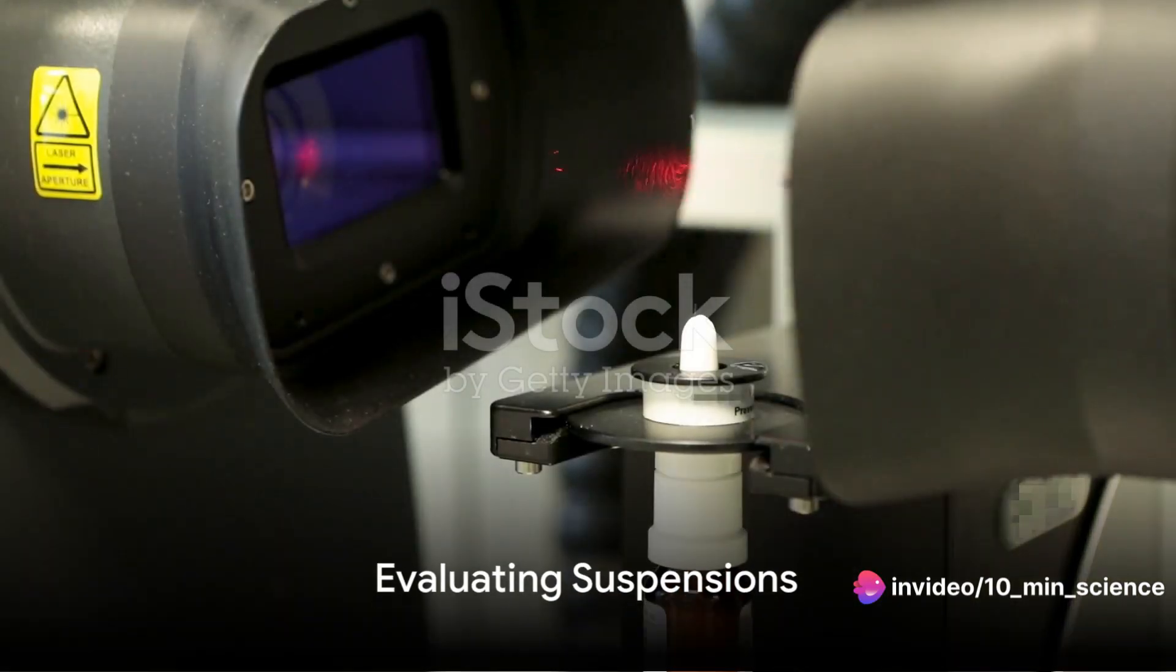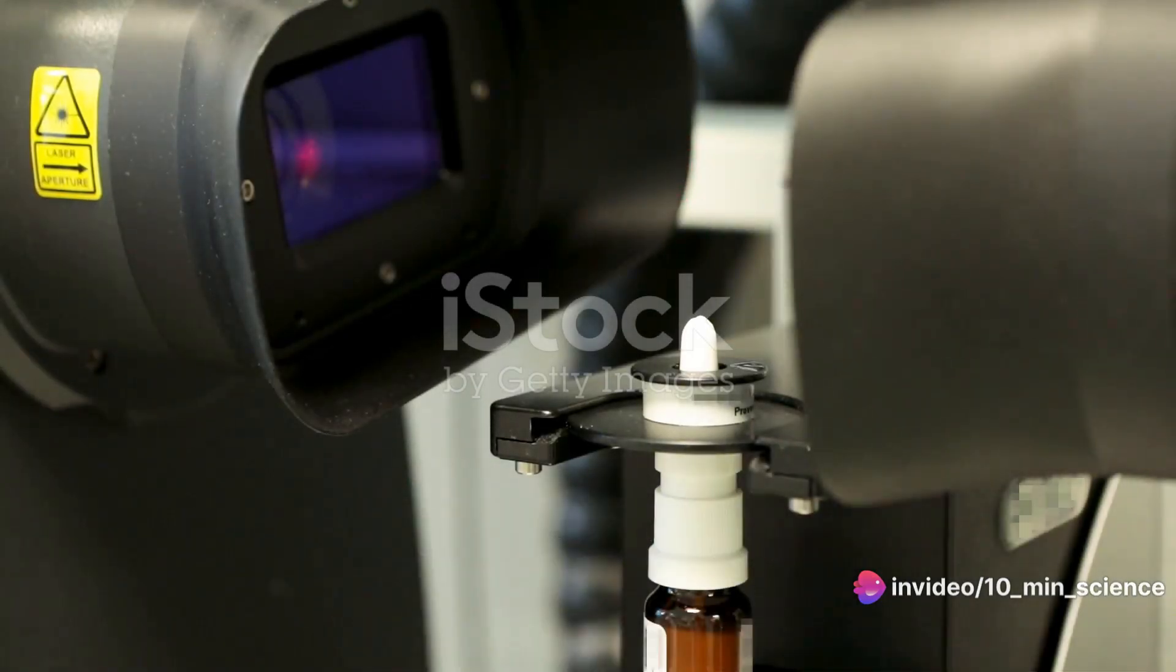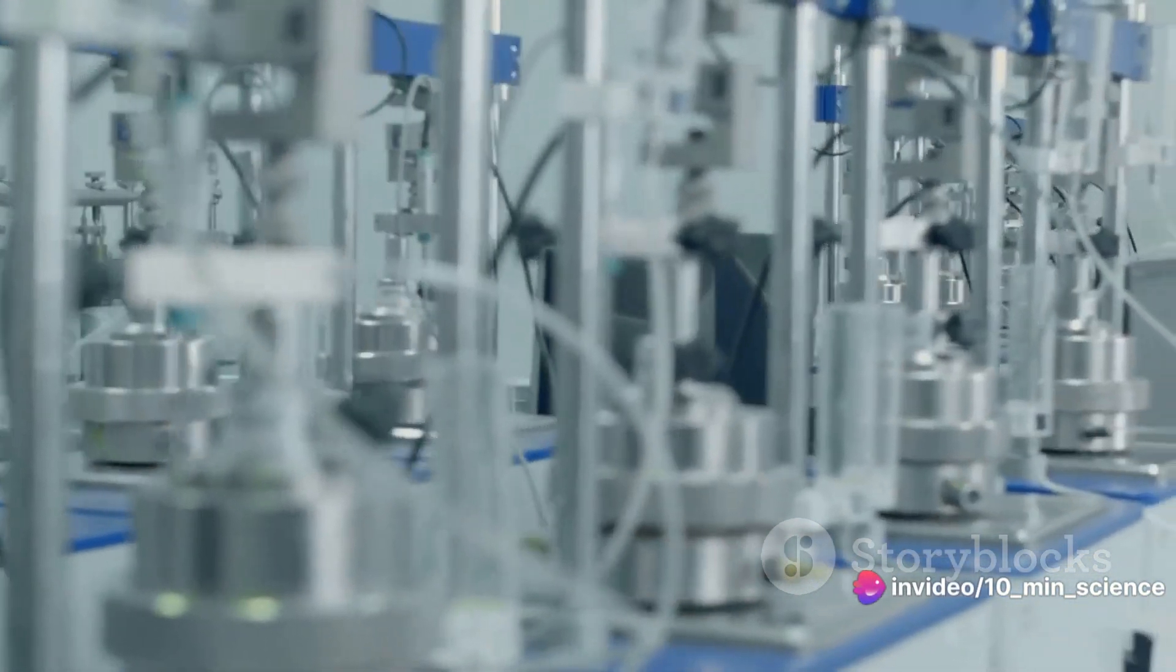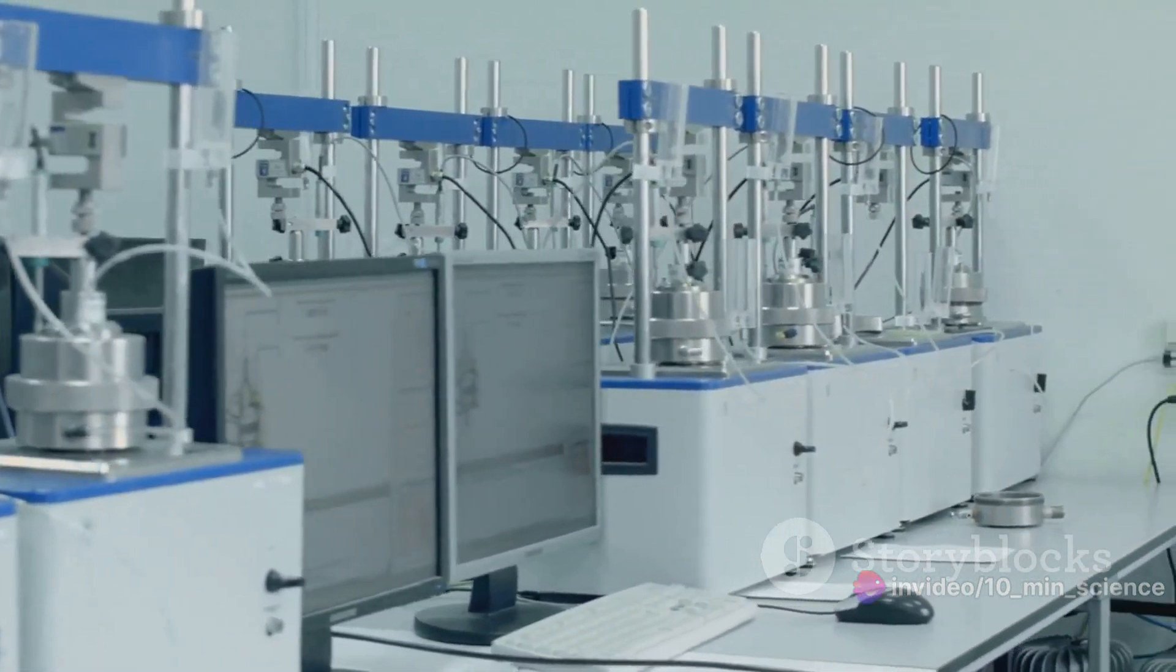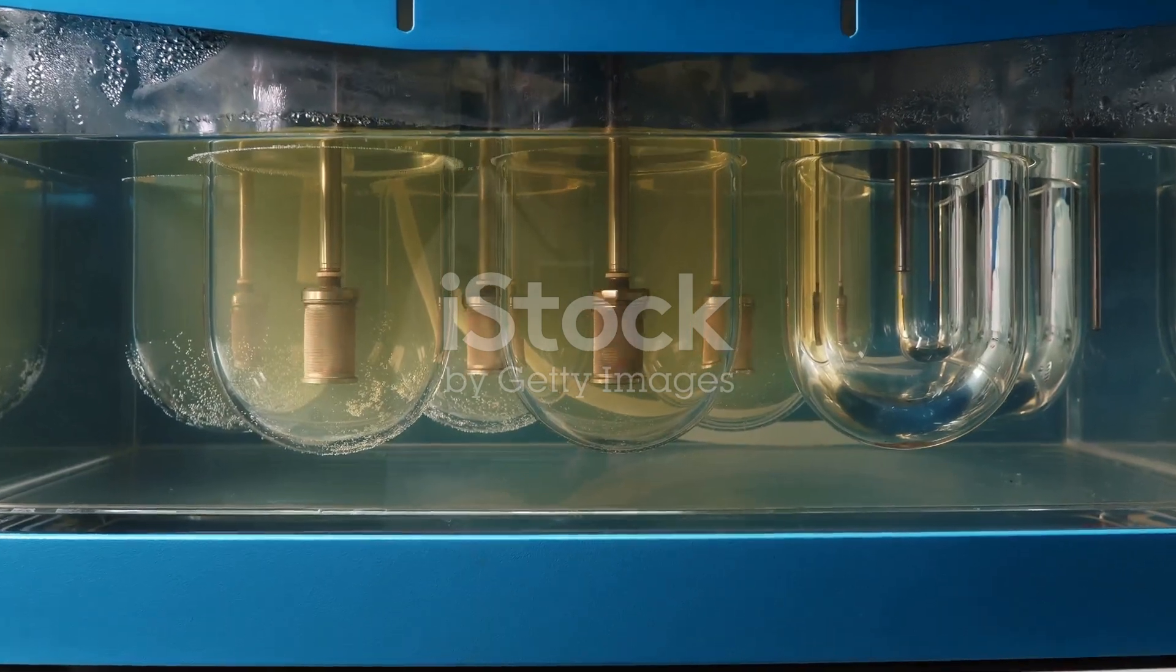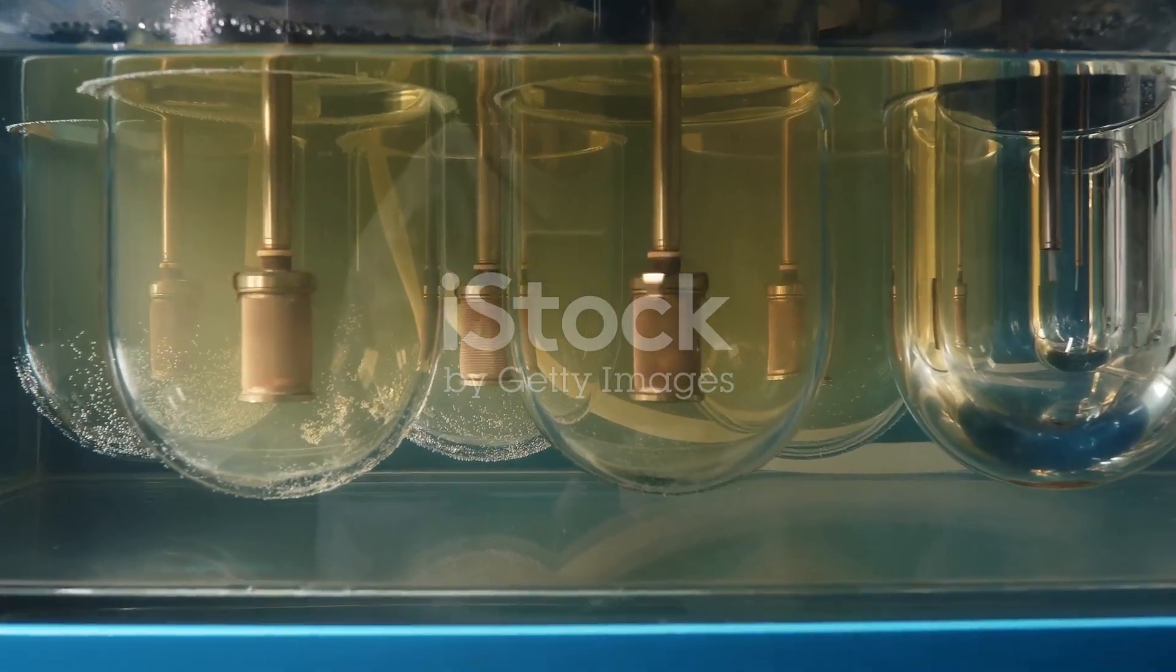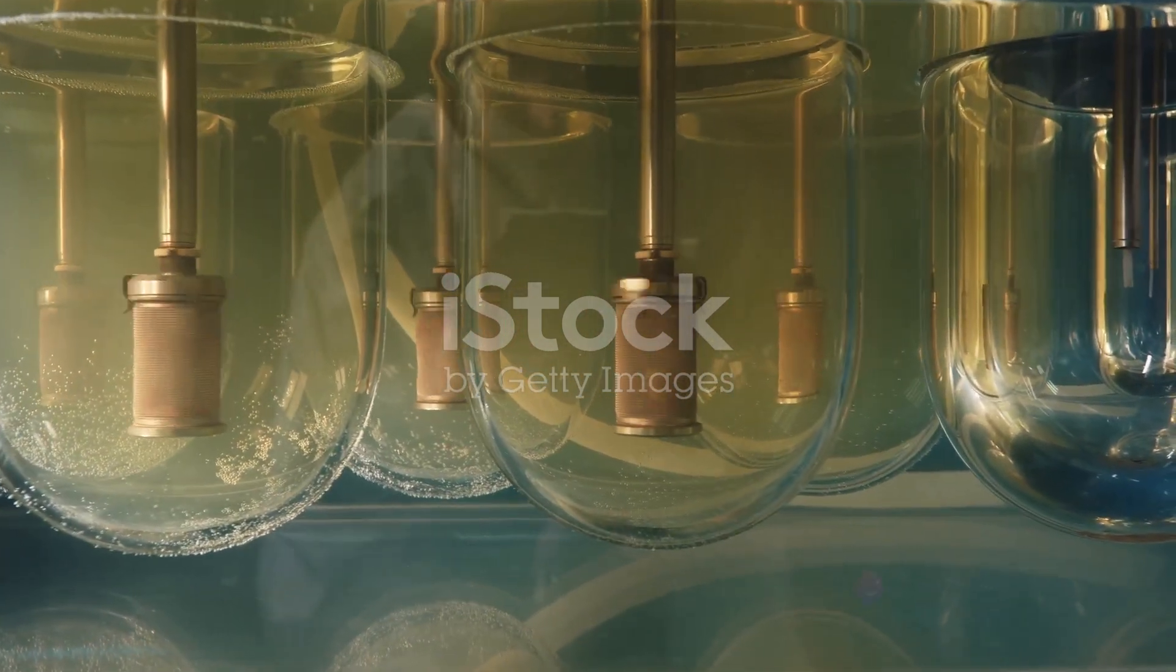How do we measure the quality of a suspension? Well, it's not as simple as just looking at it. Evaluating suspensions involves a detailed analysis of various parameters. Let's dive into that. First up is particle size. The size of the particles in a suspension can greatly impact its stability and overall performance. Therefore, particle size analysis is a crucial step in the evaluation process.